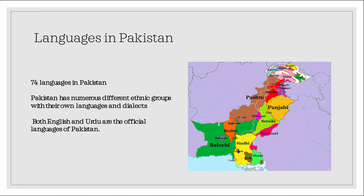In Pakistan, although there are 74 languages, it narrows down to two official languages — one of those being English, which I won't talk about in this presentation, and the other one being Urdu. First, let's look at the map of Pakistan that's actually on this slide and see where these languages reside.